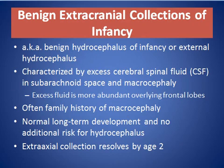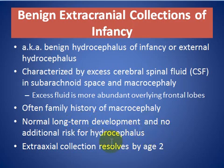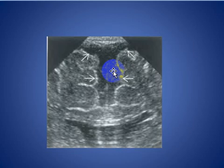Benign extracranial collection of infancy, also known as benign hydrocephalus of infancy or external hydrocephalus, is characterized by excessive cerebrospinal fluid in the subarachnoid space and macrocephaly. Excess fluid is more abundant overlying the frontal lobes. There is often a family history of macrocephaly, normal long-term development, and no additional risk of hydrocephalus. The extracranial collection resolves by two years of age. Here we see dilatation of the external CSF spaces in the frontal region by ultrasound.